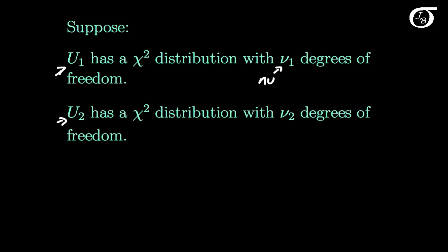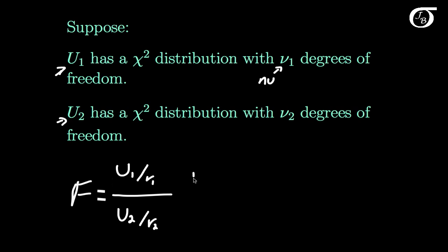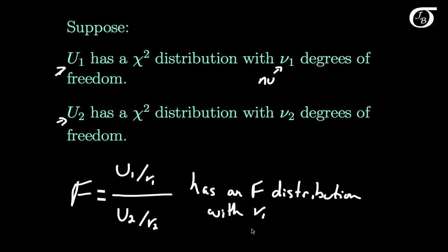Now if we define a new random variable — U1 over its degrees of freedom nu1, divided by U2 over its degrees of freedom nu2 — in other words the ratio of two independent chi-square random variables over their degrees of freedom, then we're going to call this an F, because it has an F distribution with nu1 degrees of freedom in the numerator and nu2 degrees of freedom in the denominator.